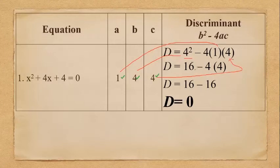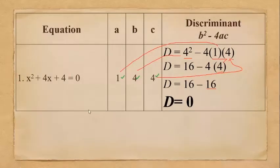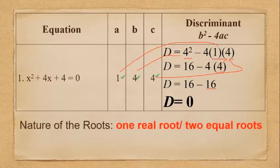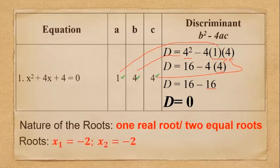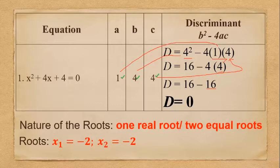Since D is equal to 0, the nature of the roots is one real root or two equal roots. If we solve for the roots of this equation using any method — factoring, completing the square, quadratic formula, or extracting square roots — the values of x are negative 2 and negative 2. It's counted as one real root, but the roots are equal.